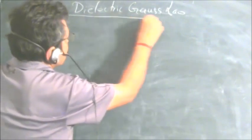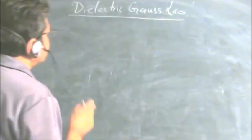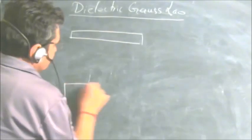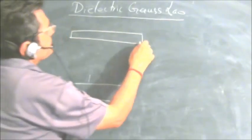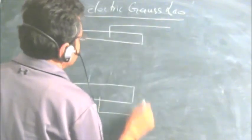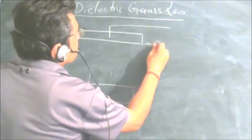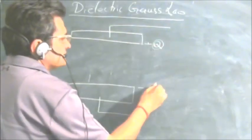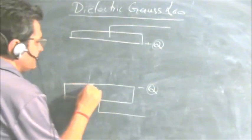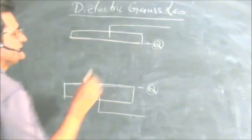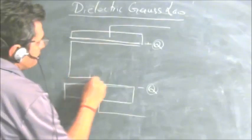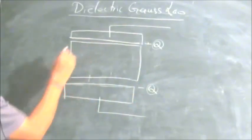In this lecture we will derive the expression for Gauss law when a dielectric is placed between the plates of the capacitor. We take a situation where a capacitor is connected to a voltage supply, with plus Q on one plate and minus Q on the other. Always remember that these are free charges — the charge which is on the plate of the capacitor. When we place a dielectric, there is induced charge on the surfaces of the dielectric.